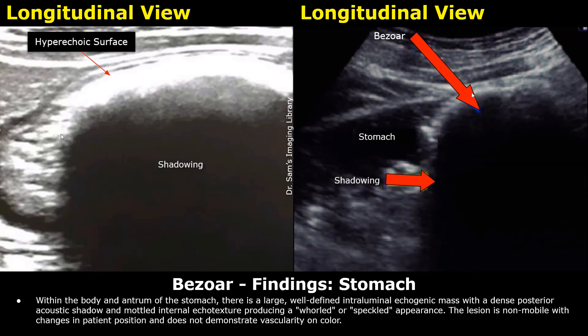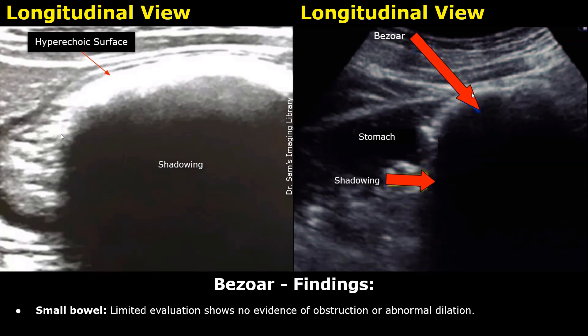These are the findings in the stomach. Within the body and antrum of the stomach, there is a large, well-defined, intraluminal echogenic mass with a dense posterior acoustic shadow and mottled internal echo texture, producing a whirled or speckled appearance. The lesion is non-mobile with changes in patient position and does not demonstrate vascularity on color Doppler. Small bowel evaluation shows no evidence of obstruction or abnormal dilation.